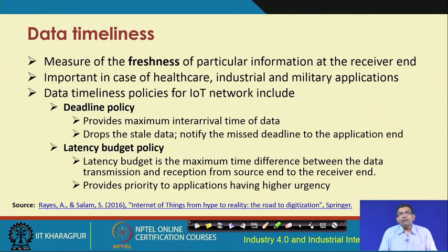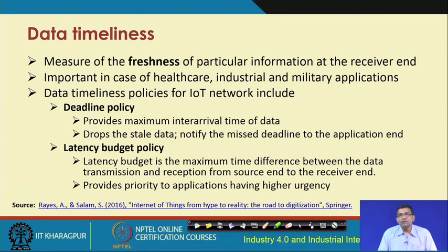Data timeliness policies for IoT networks include the deadline policy - that is, the maximum inter-arrival time of data and provisioning for it - which is a very important policy consideration. The second policy consideration is the latency budget policy, which is the maximum time difference between data transmission and reception from source to receiver.